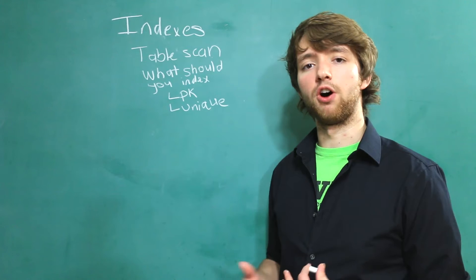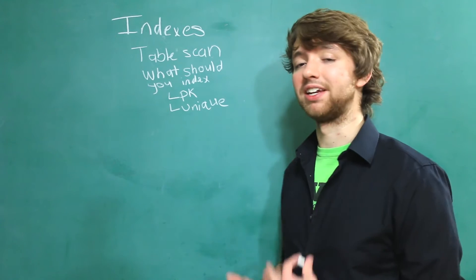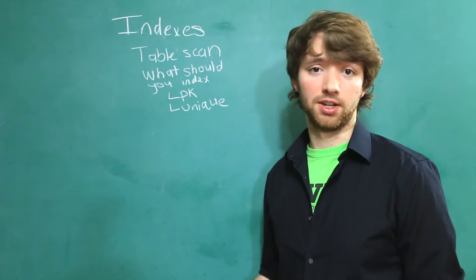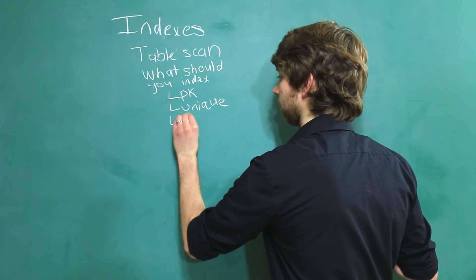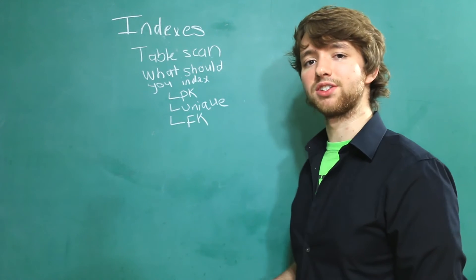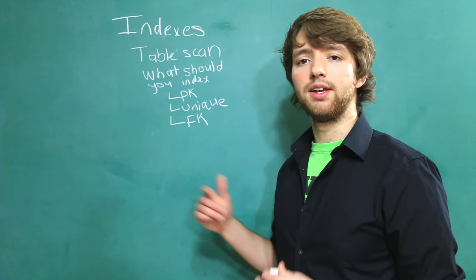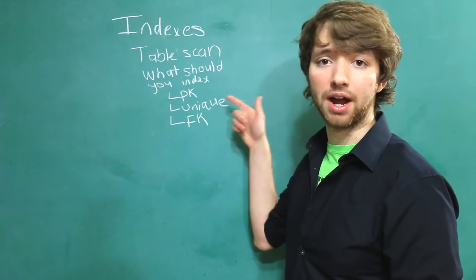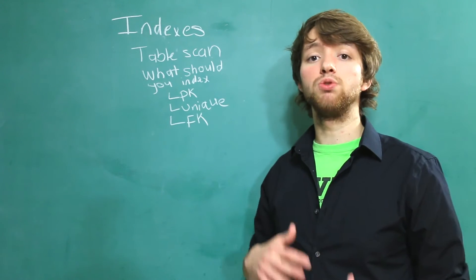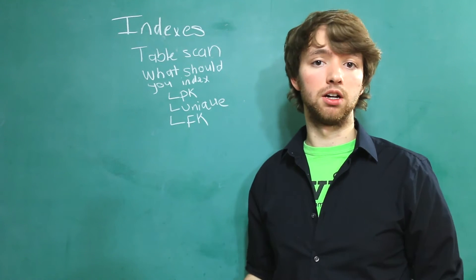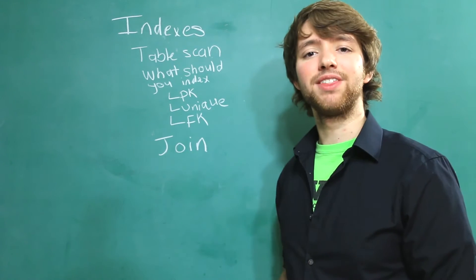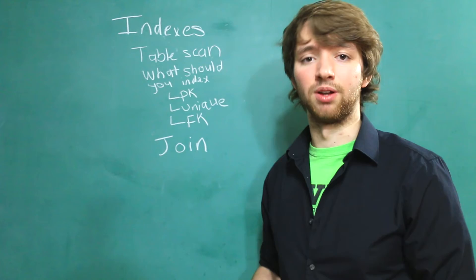Now I don't think Oracle does this by default, but another thing you should consider having an index for are your foreign keys. And the primary reason I suggest you do foreign keys is similar to why we have it for primary keys. It's because we use these keys to join data. So what is a join? Let's go into that a little bit so you have more of an idea of what I'm trying to explain here.